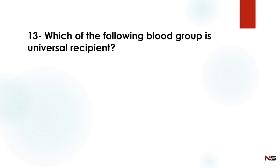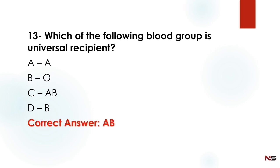Next question: Which of the following blood groups is the universal recipient? Option A: A. Option B: O. Option C: AB. Option D: B. The correct answer is AB. The AB blood group is the universal recipient.